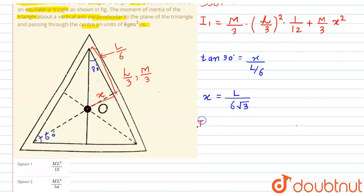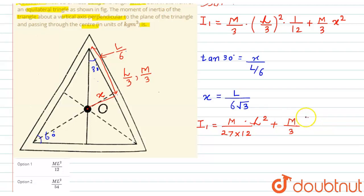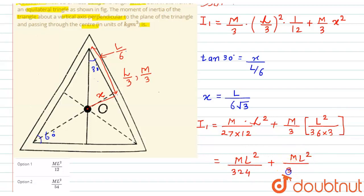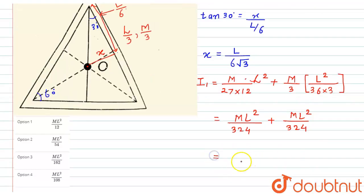Substituting the value of x into the equation for I₁: the first term gives ML²/(9 × 12 × 3) = ML²/324. For the second term, x² = L²/(36 × 3) = L²/108, so (M/3)·x² = ML²/324. Adding both terms: I₁ = ML²/324 + ML²/324 = 2ML²/324 = ML²/162.